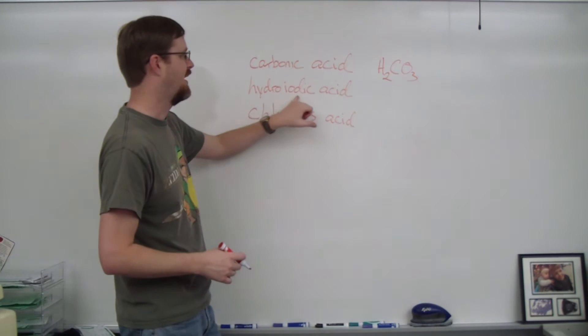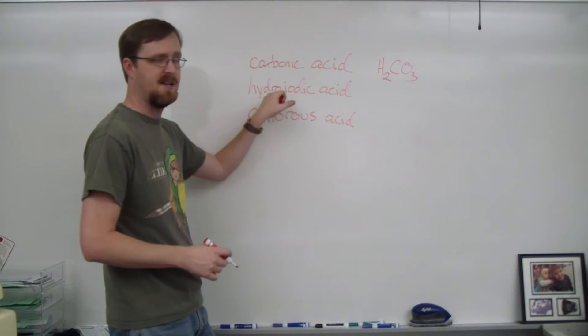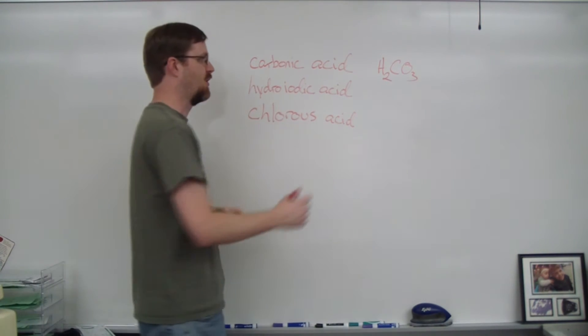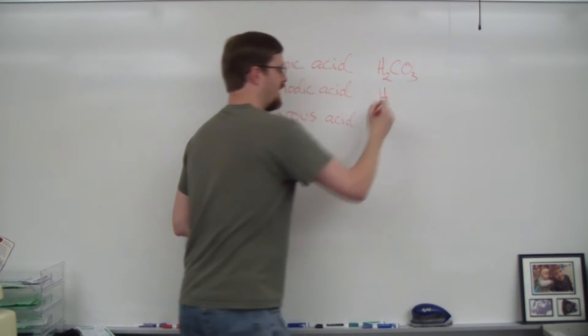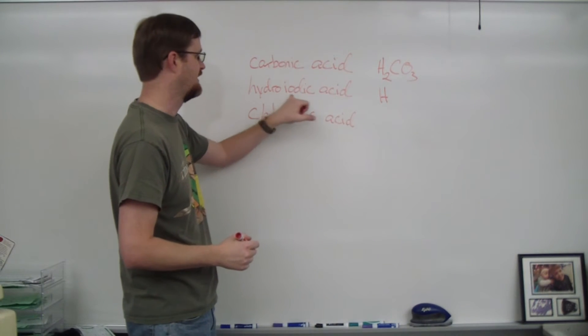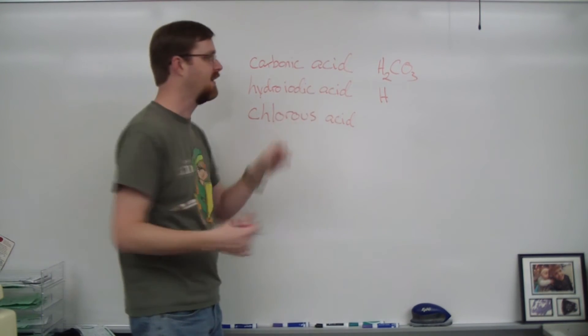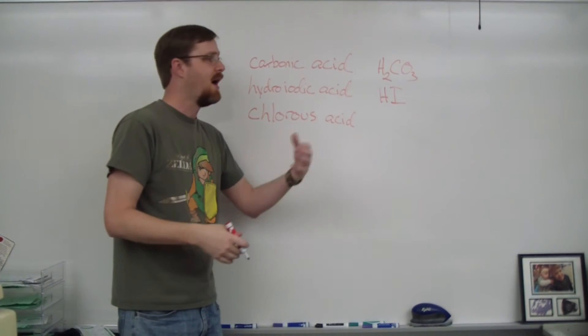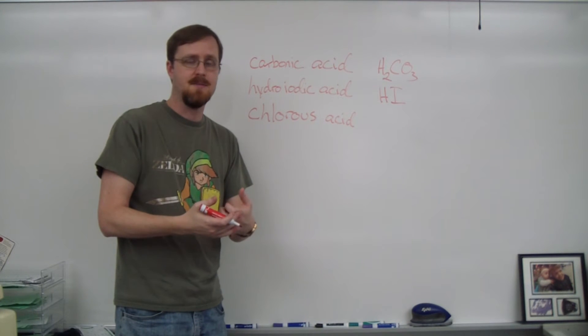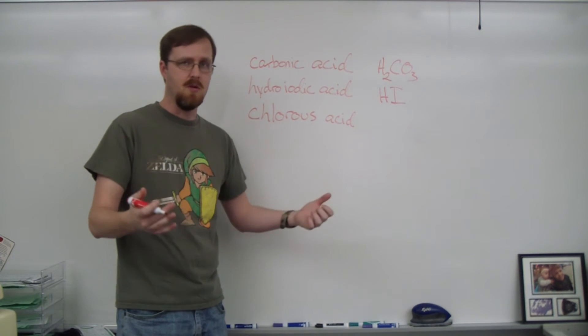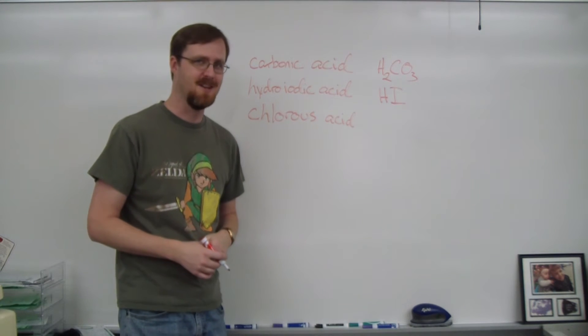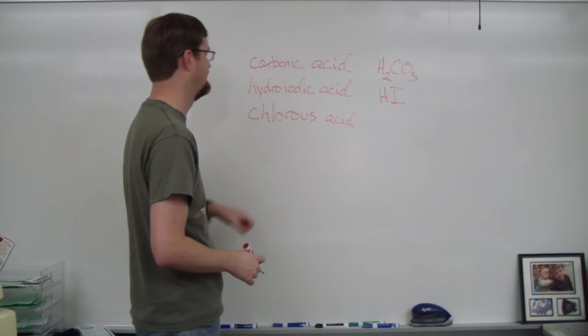Next example, hydroiodic acid. Well, it has the prefix hydro, which means this is a binary acid. It's going to be hydrogen and one other element, which in this case, hydroiodic is iodine. So HI. Hydrogen is plus one. Iodine negative one. They're already added to zero. Therefore, we don't need any subscripts. So it's HI, the most friendly acid there is. Hydroiodic acid.